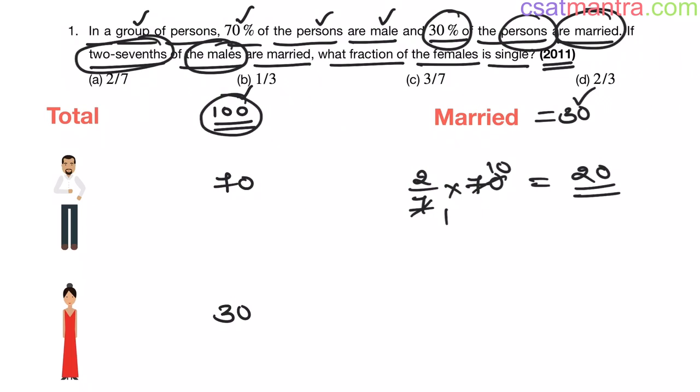Now, remaining 10 people, 30 minus 20, remaining 10 people who are married will be from females. So, 10 females are married.